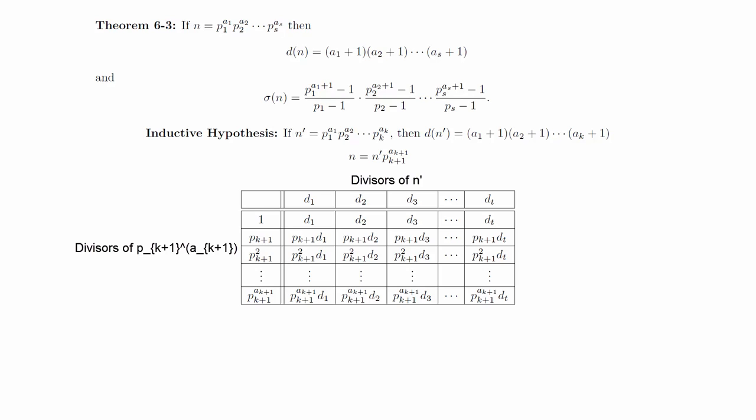Every divisor of n is listed exactly once in this chart. We can see this since every divisor of n will have some power of p sub k plus 1 in it, where that power might be zero, and whatever we are left with after factoring out the powers of p sub k plus 1 will be some divisor of n prime.